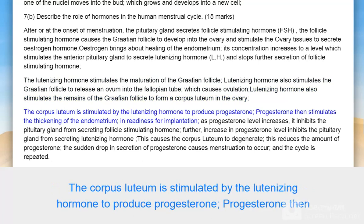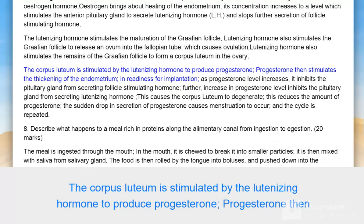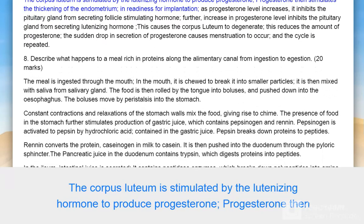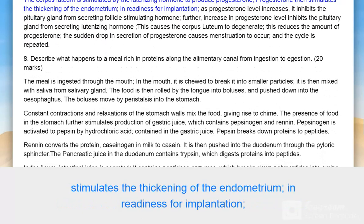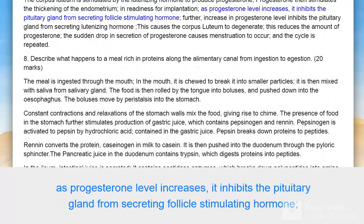The corpus luteum is stimulated by the luteinizing hormone to produce progesterone. Progesterone stimulates the thickening of the endometrium in readiness for implantation. As progesterone level increases, it inhibits the pituitary gland from secreting follicle stimulating hormone.